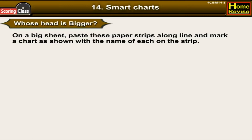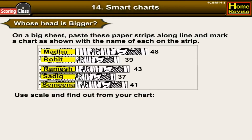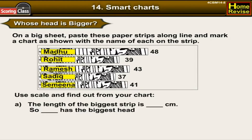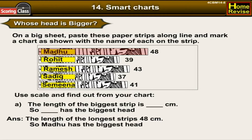Use a scale and find out from your chart: the length of the biggest strip. The longest strip is 48 centimeters, so Manu has the biggest head.